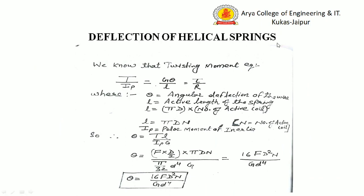Now, the deflection of the helical spring. The torsion equation is T/Ip = Gθ/l = τ/r, where θ is the angular deflection of the spring wire and l is the active length of the spring. As discussed in the last lecture, l equals the length of one coil (π D) multiplied by the number of active coils N, so l = π D N.